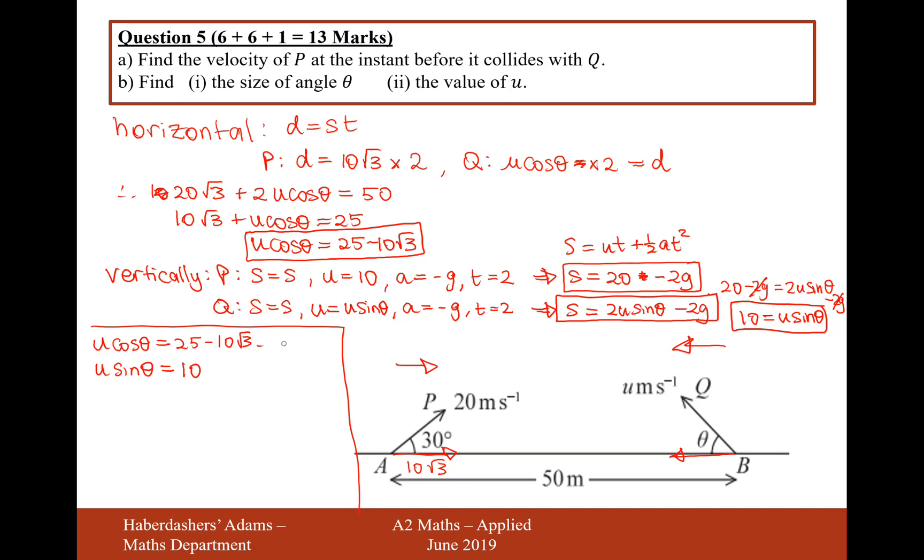Okay, so all that remains is for us to now solve this. We'll call this equation number 1. We'll call this equation number 2. We'll do equation 2 divided by equation number 1. And that will give us tan theta equals 10 divided by 25 minus 10 root 3. And that will give us an angle of theta. Let's work it out in the calculator. Tan inverse, fraction button 10 over 25 minus 10 root 3. Whoops, I put the bracket in the wrong place. And that's going to give us 52.5.